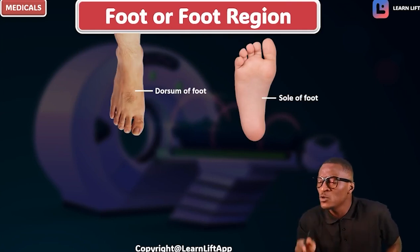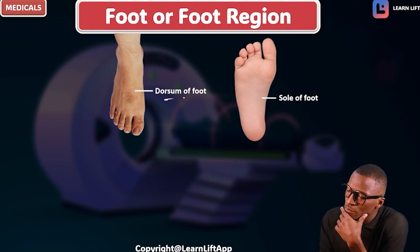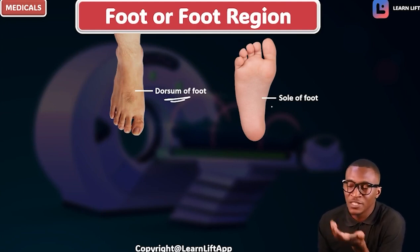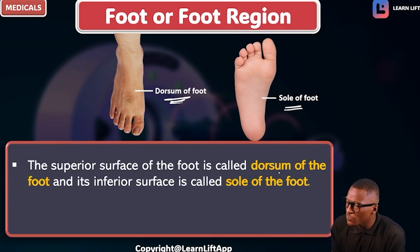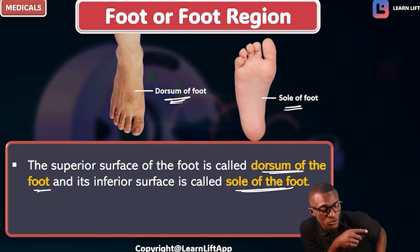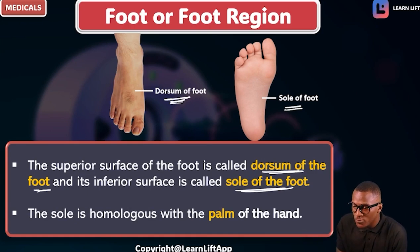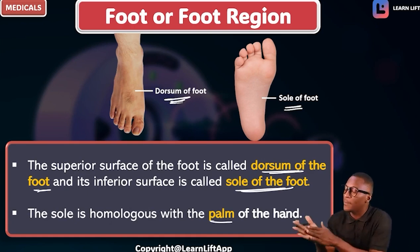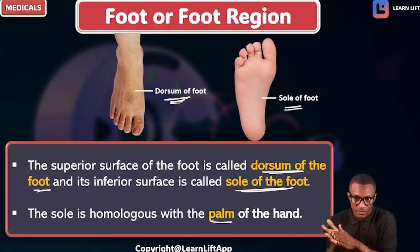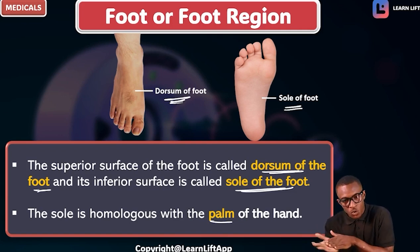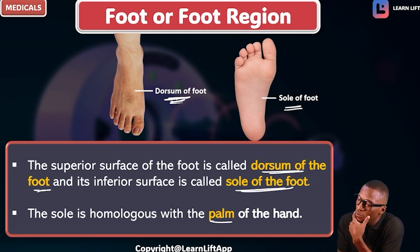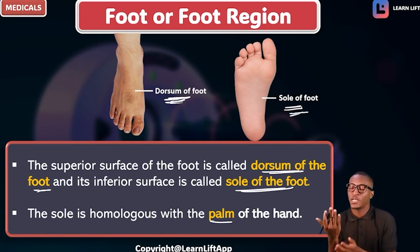Take note that the superior surface of the foot is called the dorsum of the foot, while the inferior surface — posteriorly — is called the sole of the foot. The sole of the foot is homologous to the palm of the hand. For the hand we say dorsum of the hand and palm of the hand; for the foot we say dorsum of the foot and sole of the foot. Both are just opposites of each other.